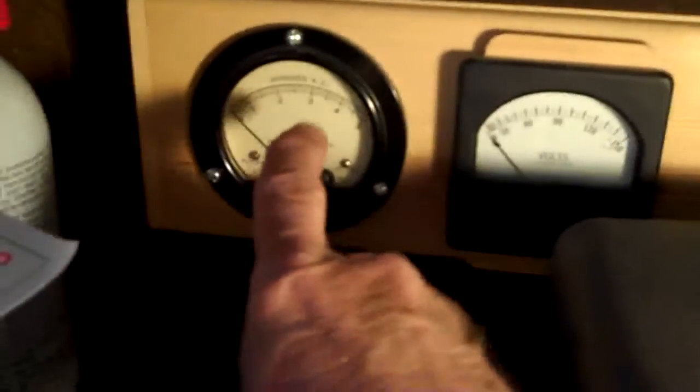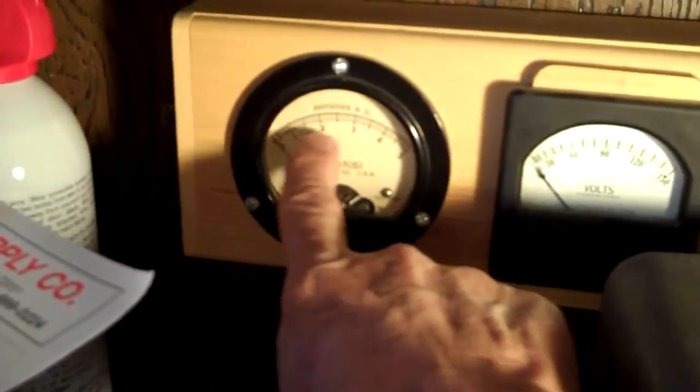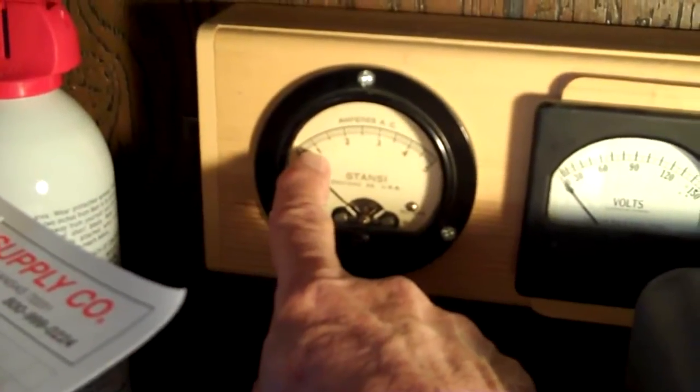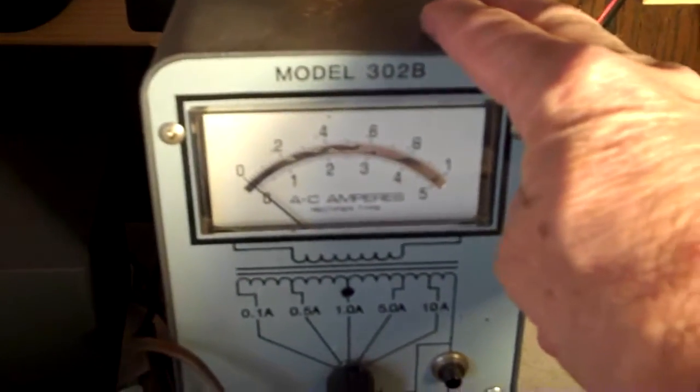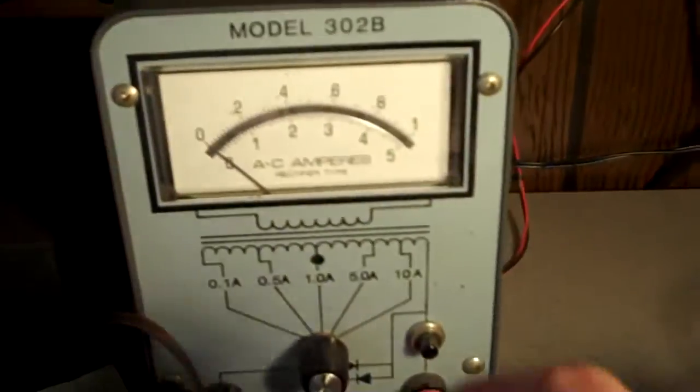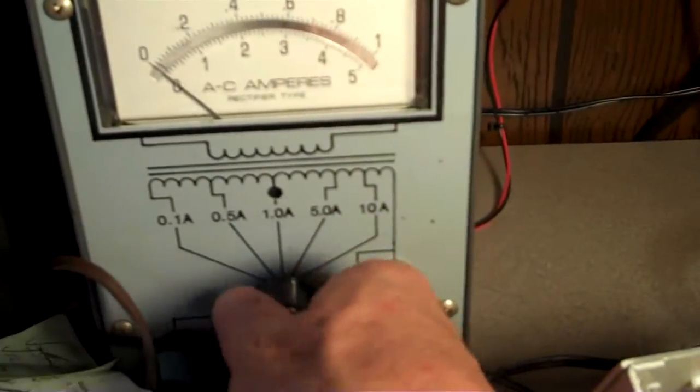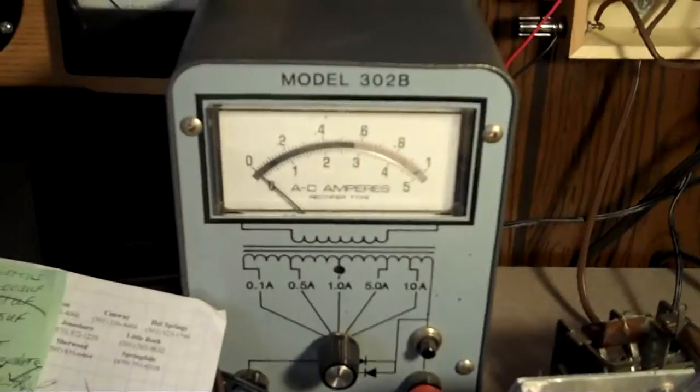What I did was I bought this 5 amp AC amp meter and you can see 1, 2, 3, 4, 5. The problem was I couldn't read down real small. I didn't like that. So I bought this model 302 Hampton meter. It's a lab meter, very tough, and it has scales from 0.1, 0.5, 1, 5 and 10 amps. All I gotta do is flip my little button. It works great. Built rugged.